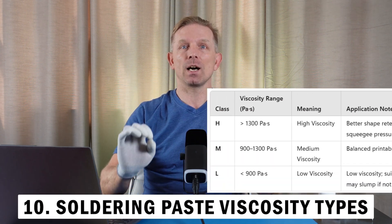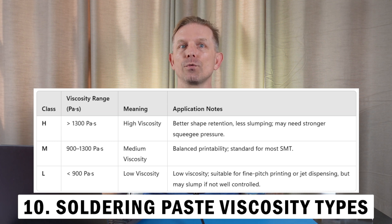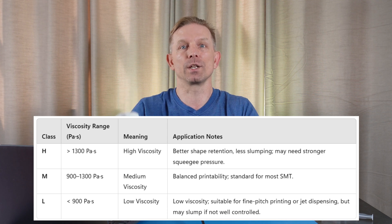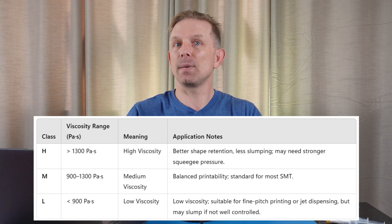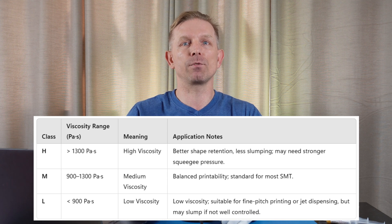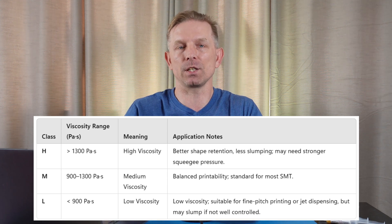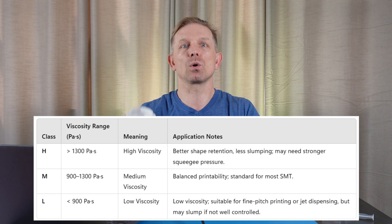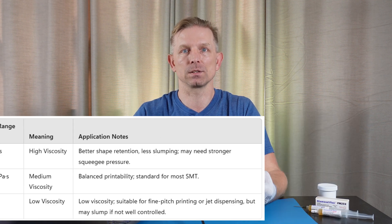Tenth topic: solder paste viscosity types. Type H — high viscosity — is a thick paste, good for hot rooms or when the paste must hold its shape longer; often used for manual printing or with dispensers. Type M — medium viscosity — is the most common type for stencil printing, offering balanced flow and shape retention. Type L — low viscosity — flows easily and is used for fine-pitch components, small apertures, or cool controlled environments.